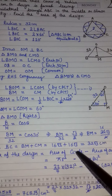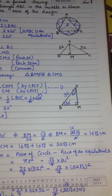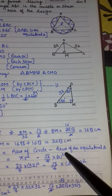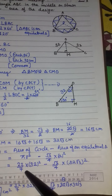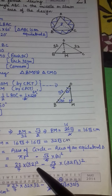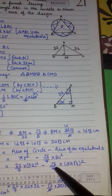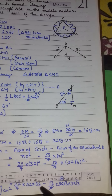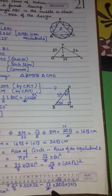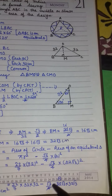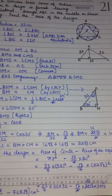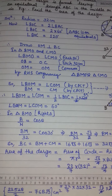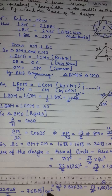Area of design = Area of circle − Area of equilateral triangle = πr² − (√3/4) × side². Substituting: (22/7) × 32² − (√3/4) × (32√3)². Simplifying: (22/7) × 1024 − (√3/4) × 3072. Final answer = 22,022/7 − 768√3 cm²।